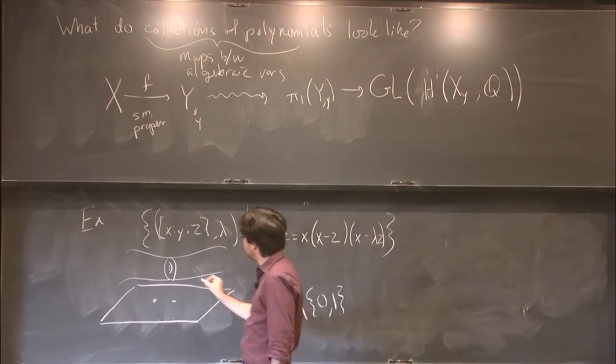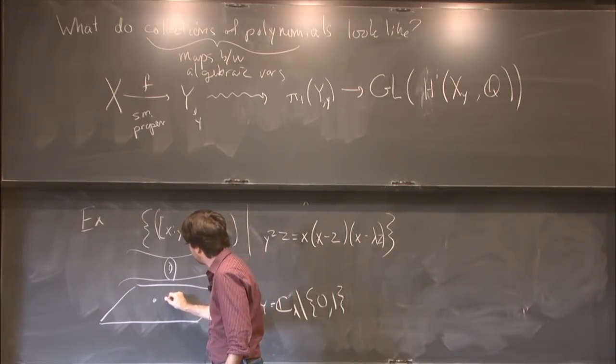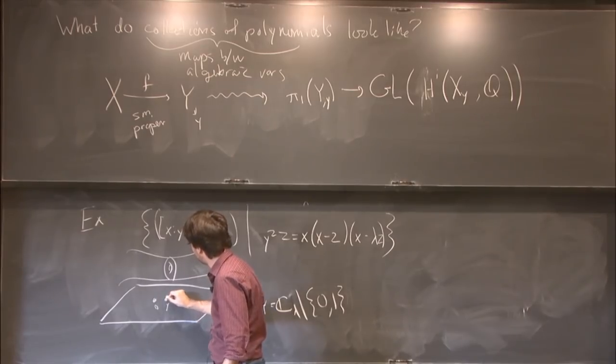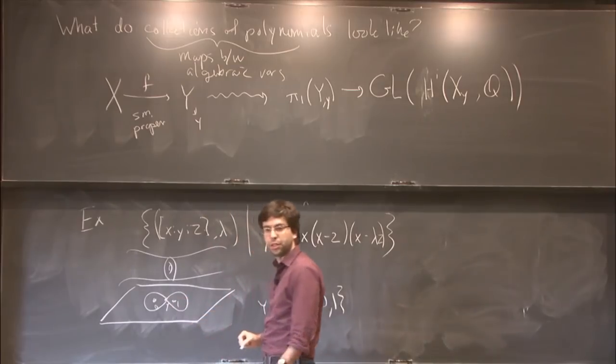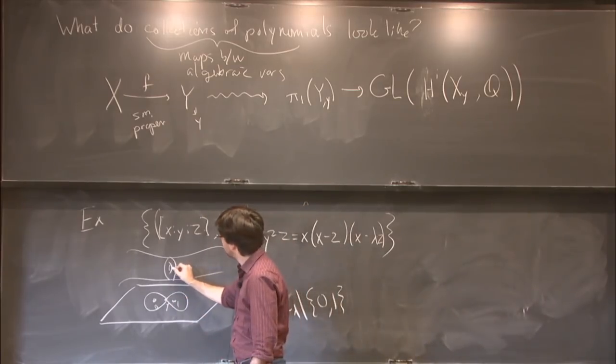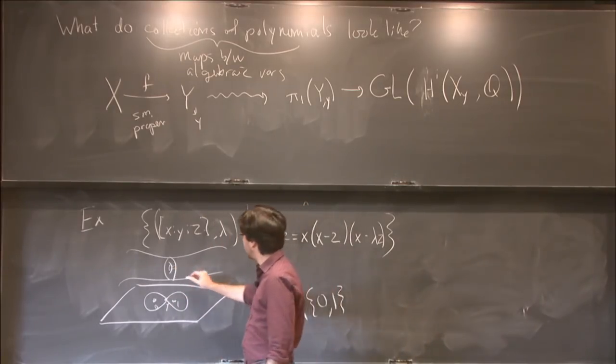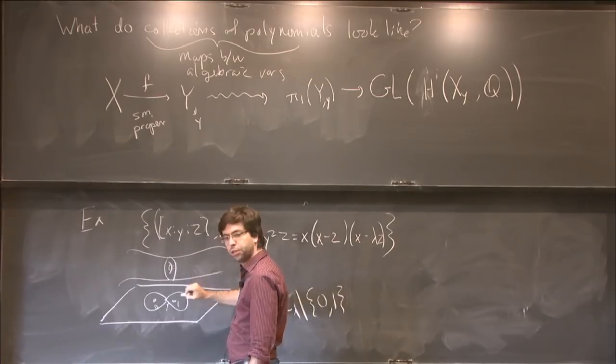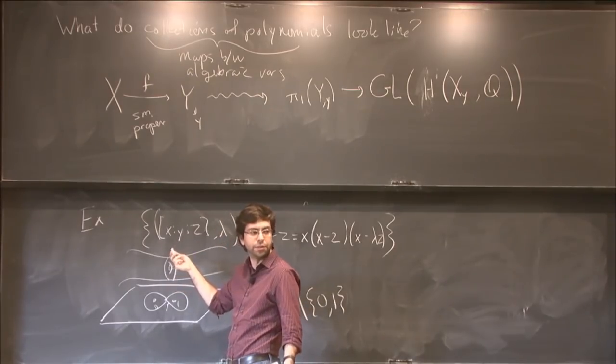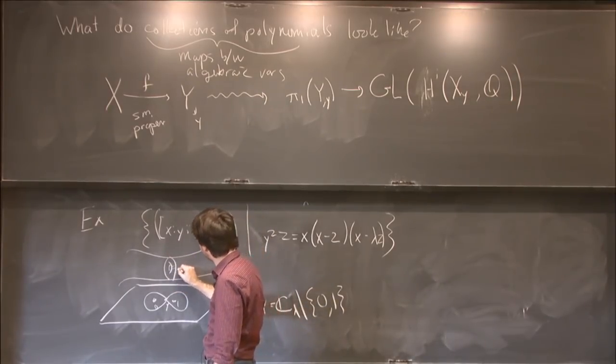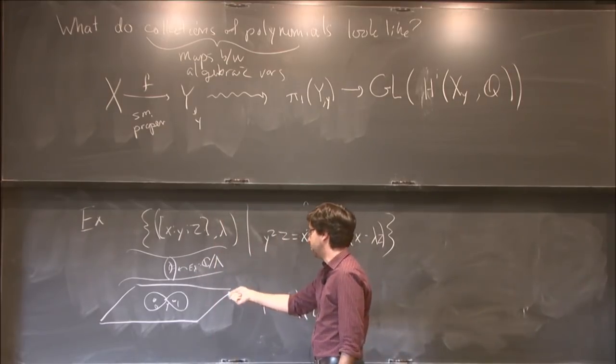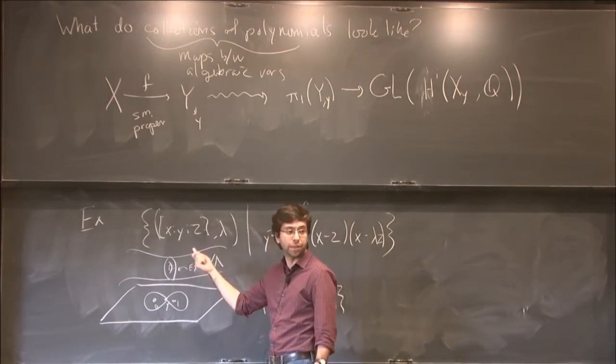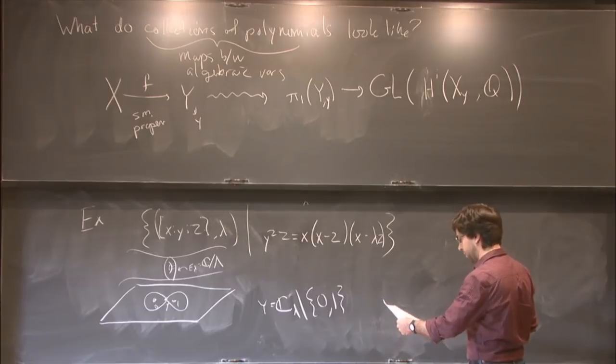Now, what is this representation? Well, if I fix my base point y, so this is 0 and 1, and I move it in a loop around either of these deleted points, I can take a cycle upstairs and follow it around this loop, and maybe I'll get a different cycle than I started with. Put another way, this fiber e lambda looks like c modulo a lattice, and the fundamental group of this acts on the lattice.